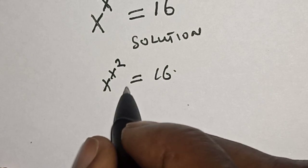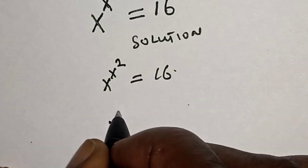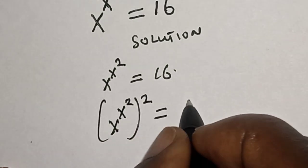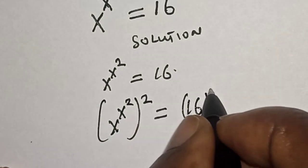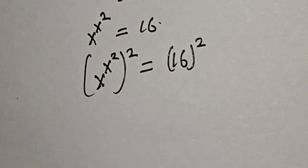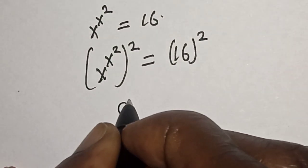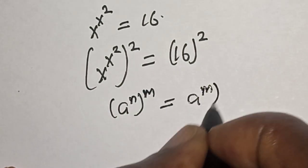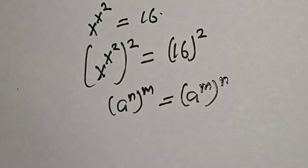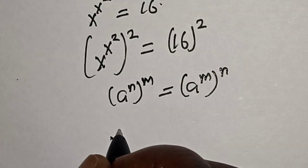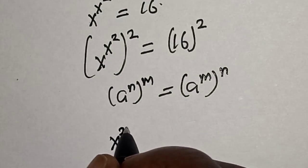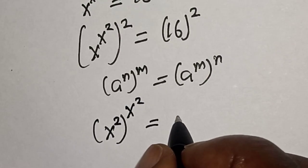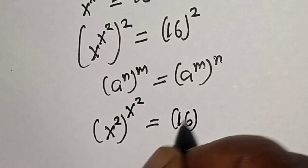Let's multiply the power of both sides by 2. That is, s raised to power s squared, raised to power 2, is equal to 16 raised to power 2. Remember the exponential rule that a raised to power n raised to power m is equal to a raised to power n times m. Then this becomes s raised to s squared, raised to power s squared, is equal to 16 squared.